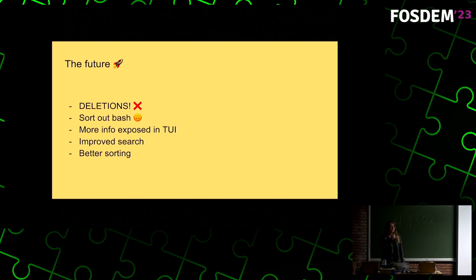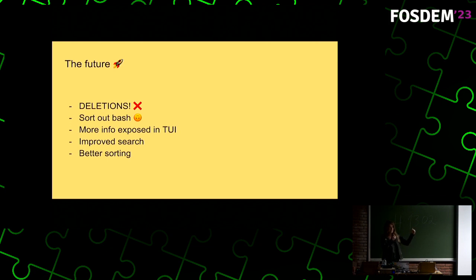I'd also really like to improve the sorting. Right now we sort chronologically, which is a pretty safe default — I'm not going to turn this into a horrible Twitter timeline type thing. But it would be nice if we could sort based on the context we have. So maybe every day at 9am you CD into your repo and run git pull — by default, it would be nice if you press Ctrl+R and git pull was already there at the time you frequently run it. We've got all the data for that; it just needs to be plugged together.